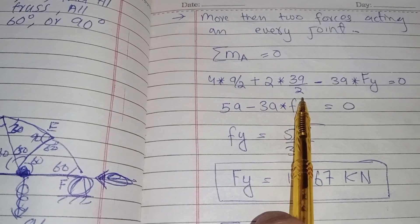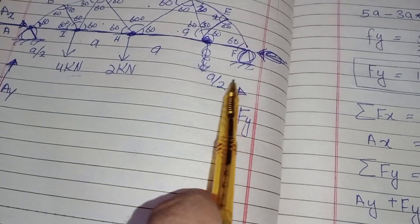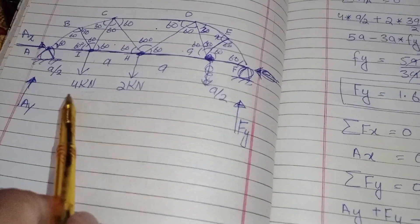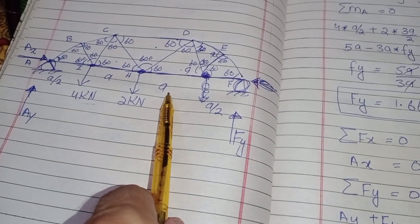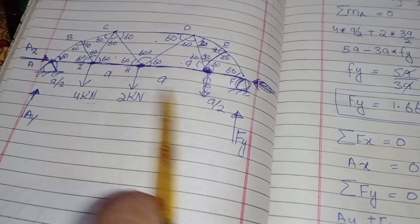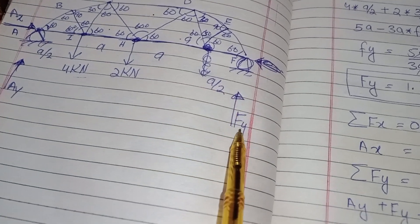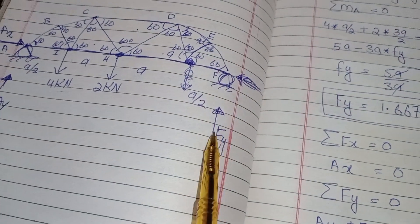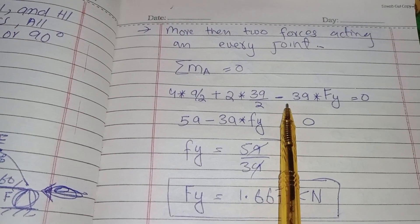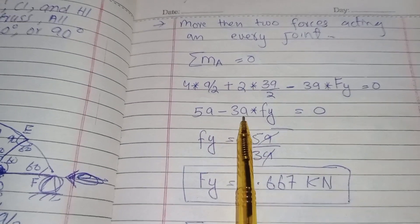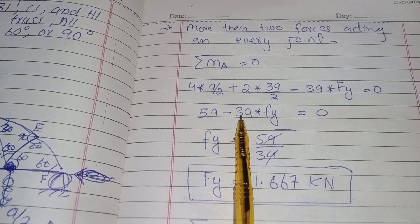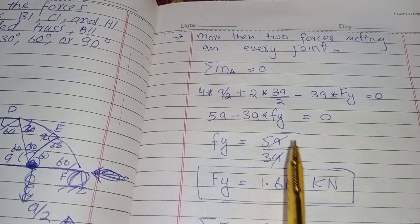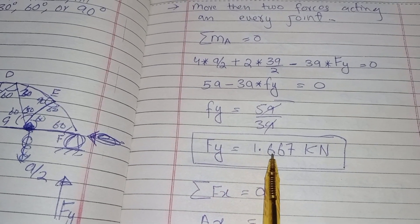The reaction force Fy at point F is at a distance of 3a from A, producing an anti-clockwise moment, so it is negative: −3a × Fy = 0. Solving: 5a − 3a × Fy = 0, so Fy = 5a / 3a = 1.667 kilonewtons.